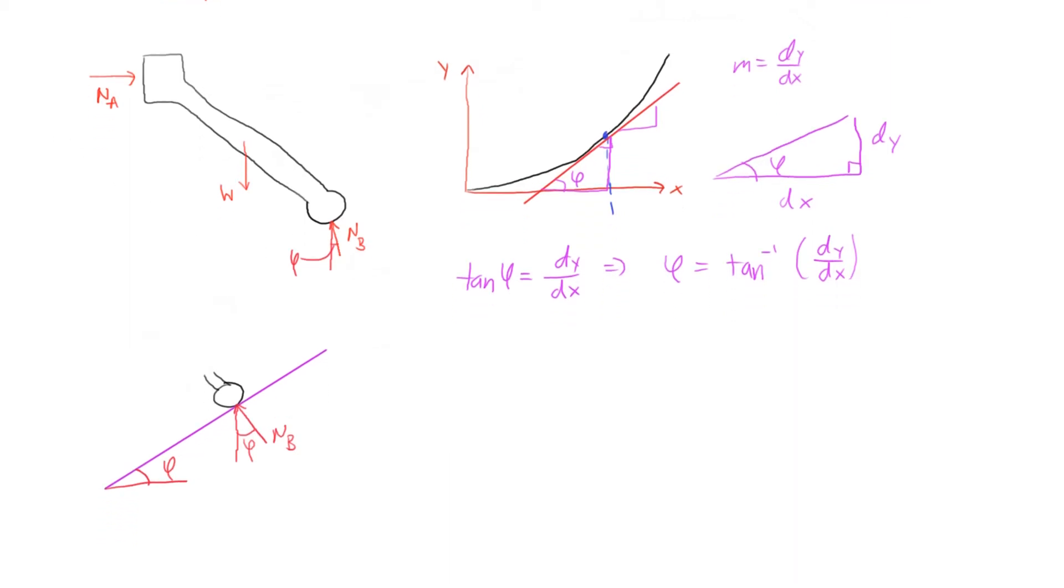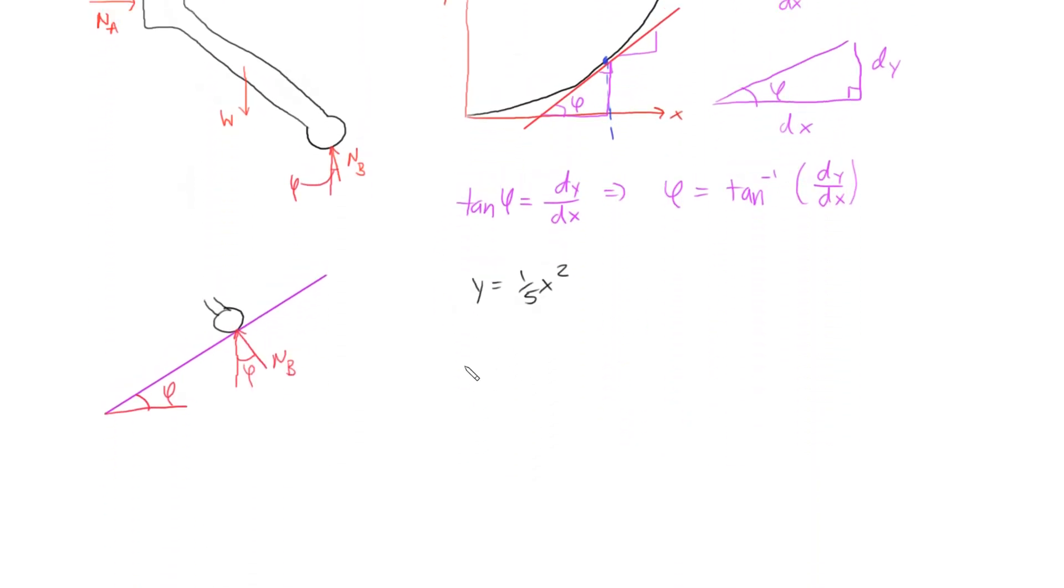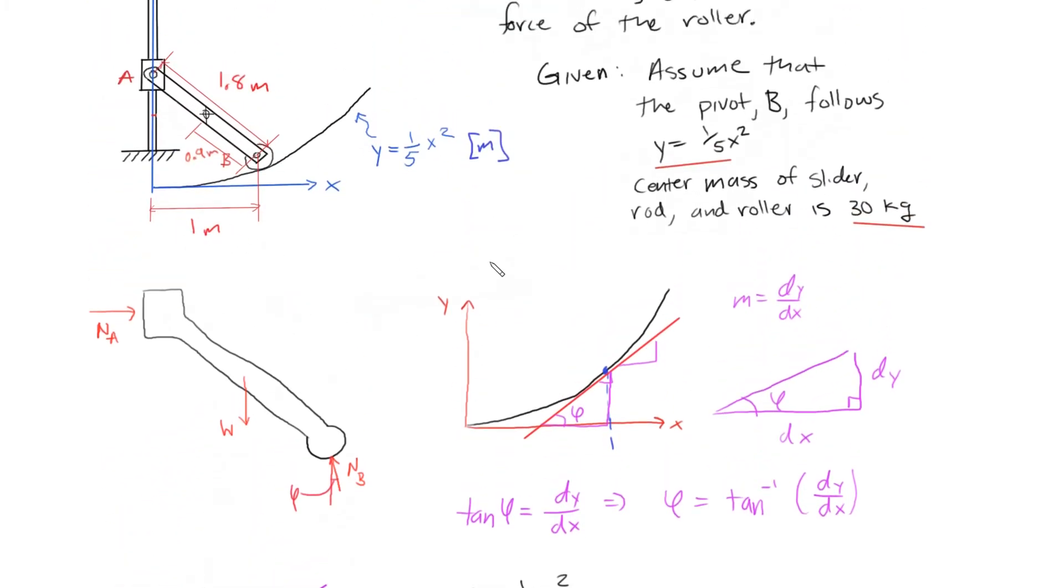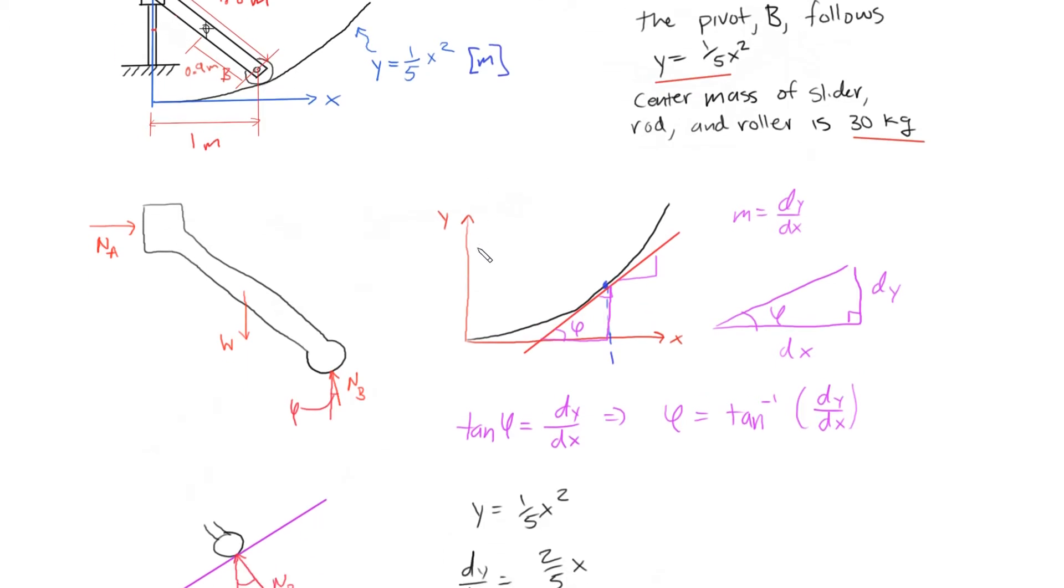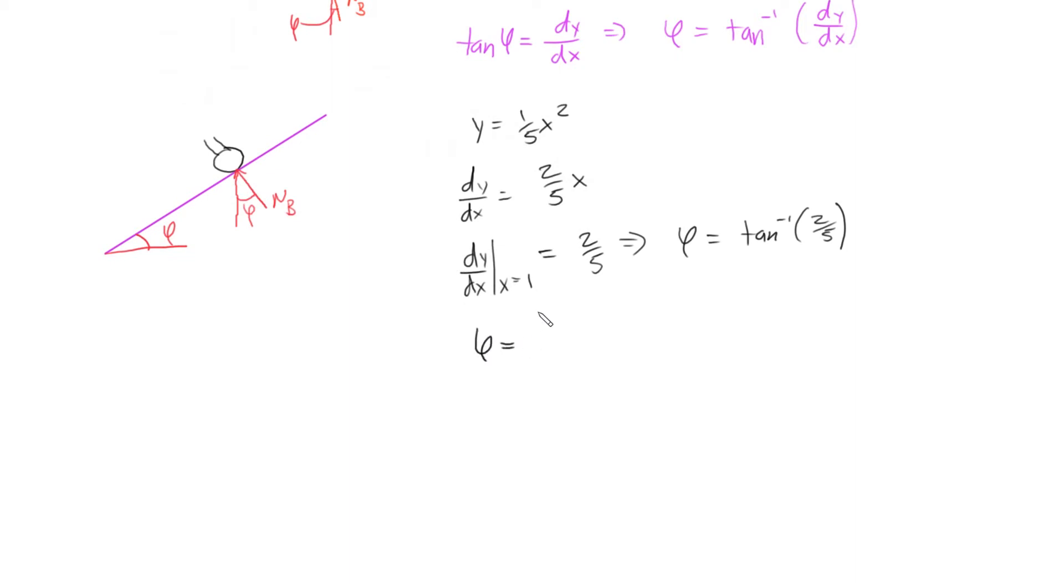Now we just have to define phi. We're given that y equals one fifth x squared, so we could take the derivative of this, so dy dx is two fifths x. We're given x in the problem which is one meter, so we could say dy dx evaluated at x equals one, we get two fifths. So that implies that phi is the tan inverse of two fifths. What we get for phi is that it's 21.801 degrees.